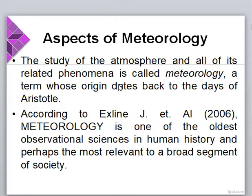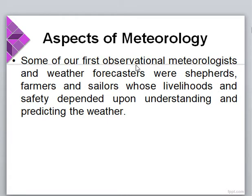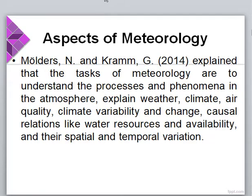Meteorology is a term whose origin dates back to the days of Aristotle. It is believed to be one of the oldest observational sciences in human history, and maybe the most relevant to a broad segment of society. Some of our first observational meteorologists and weather forecasters were shepherds, farmers, and sailors whose livelihoods and safety depended upon understanding and predicting the weather.